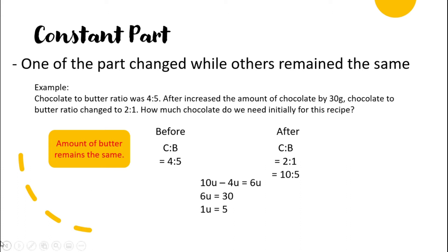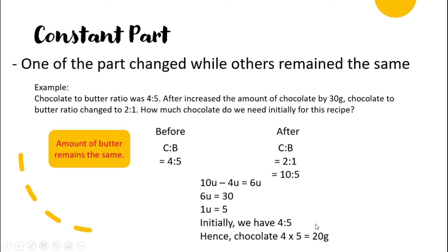Before, chocolate to butter is four to five, and after it is two to one. Since butter remains the same, we make butter equal by multiplying the after ratio by five, giving ten to five. The difference in chocolate is ten units minus four units, which equals six units. Six units equals 30 grams, so one unit equals five grams. Initially we have four units of chocolate, so four times five equals 20 grams.